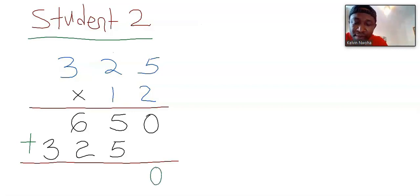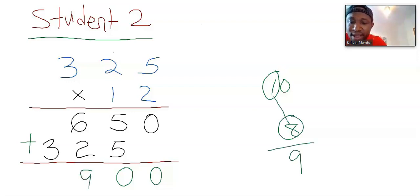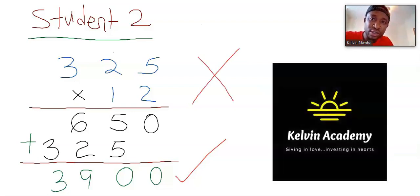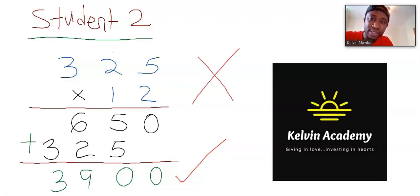This 0 will just come down. 5, we add to 5, and you get 10. 0 will go here, and we take this one along. 6 plus 2 is 8, plus this one is 9, and we have 9 here. And 3 will just come down. Student 2 equally got the answer. However, just like student 1, failed to follow the instruction and hence, got no grade.